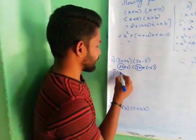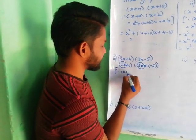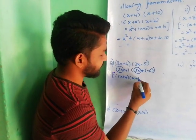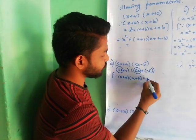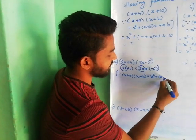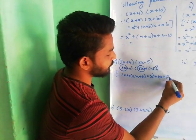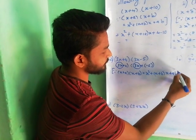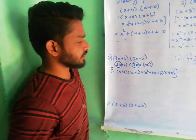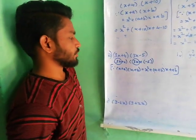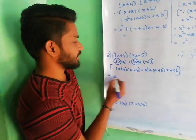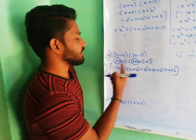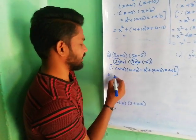So, x plus a into x plus b is equal to x square plus a plus b into x plus ab. Yes or no? Now we substitute in this format. Here x value is 3x.